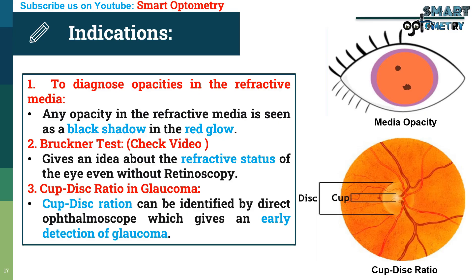In this figure, you can see this is the disc and this is the cup. The ratio between these two structures is called the cup-disc ratio. A cup-disc ratio of more than 0.3 is considered a glaucoma suspect.